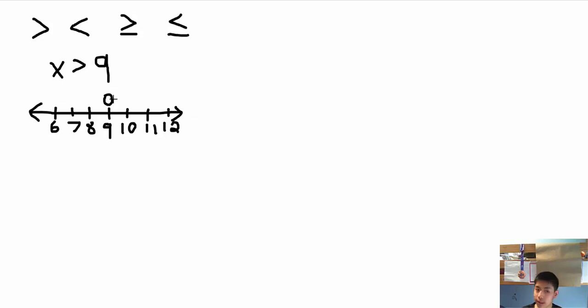Now x is greater than 9 includes any value greater than 9. So 10 would work, 11 will work, 12 will work, all the way to infinity. So this would be the way to graph an inequality on a number line. Make sure you draw the arrow to represent the continuous going on of this inequality to infinity.